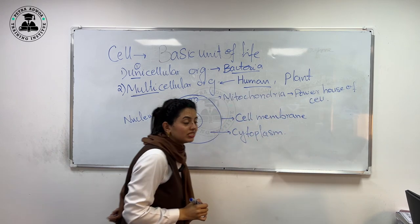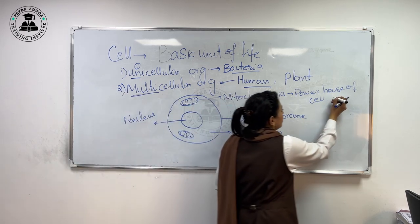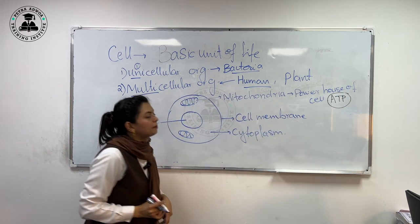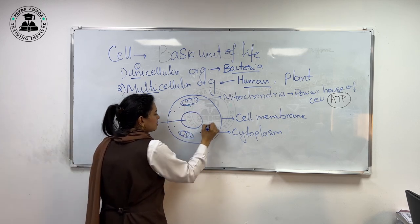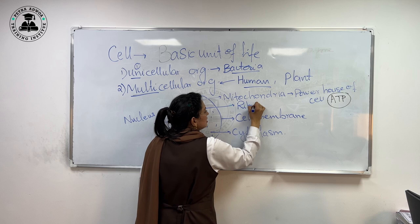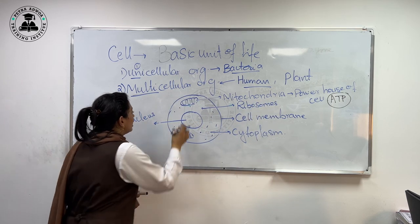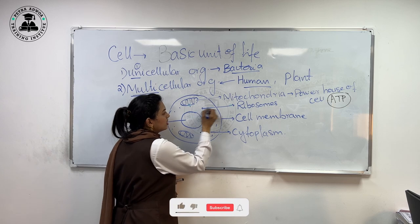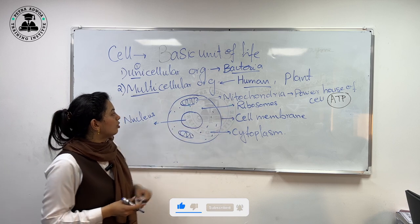Why do we call mitochondria the powerhouse of the cell? Because mitochondria basically provides us energy in the form of ATP, as respiration is the process which occurs in the mitochondria. Then we have different structures called ribosomes. The ribosome is the site where proteins are synthesized — the nucleus sends information to other organelles, which send information to the ribosome, and then the ribosome produces the protein.